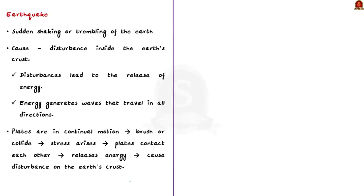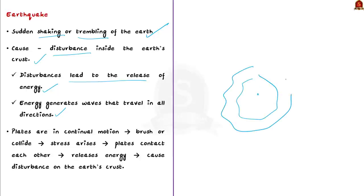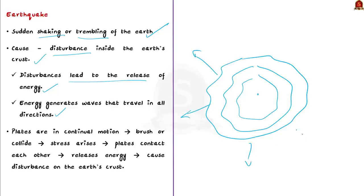An earthquake is a sudden shaking or trembling of the earth that lasts for a very short time. It is a natural event caused by disturbance deep inside the earth's crust. These disturbances lead to the release of energy, generating waves that travel in all directions. When the lithospheric plates move, the surface of the earth produces vibrations that travel all around — these vibrations are what we call earthquakes.